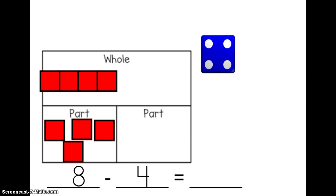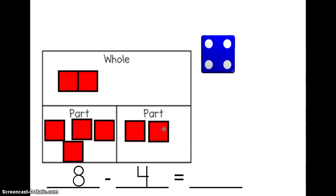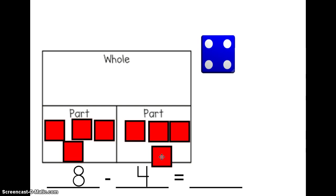I need to look at my part-part-whole mat and see how many cubes are left in my whole that I can drag into the other part of my mat to get my answer. I have four cubes left in my whole: one, two, three, four. When I drag those cubes into the other part of my mat, I can see that eight minus four equals four cubes left to drag in.